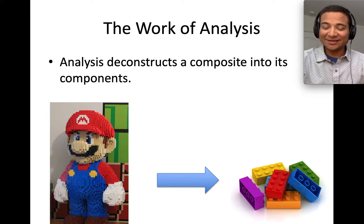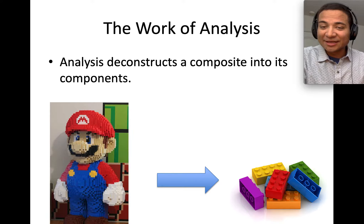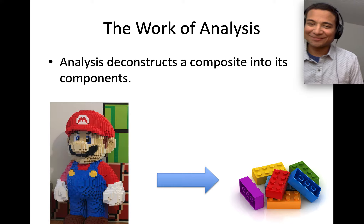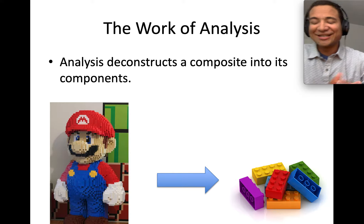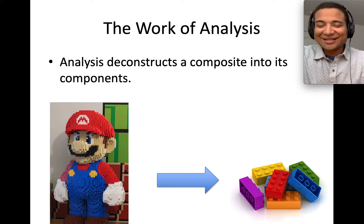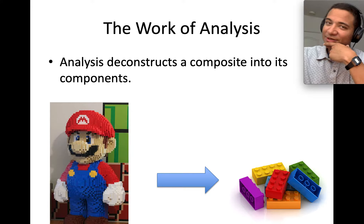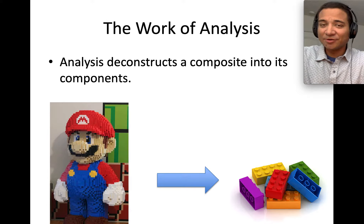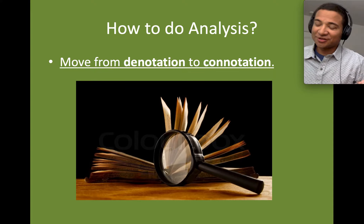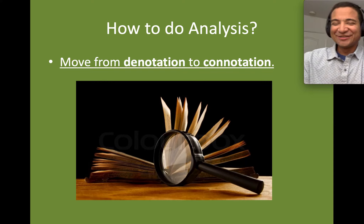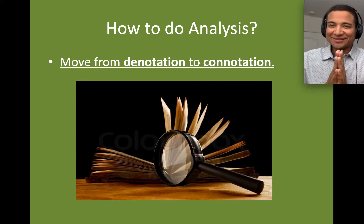So if we shift back to our conception of text — how do we deconstruct a composite into components when talking about texts? We move from what's known as denotation to connotation. It's very much a dynamic move. Whether you vaguely remember these words or have never heard them, this is how we do it.